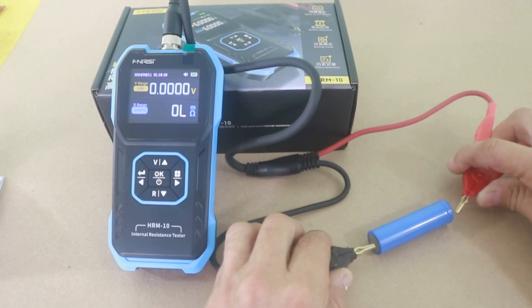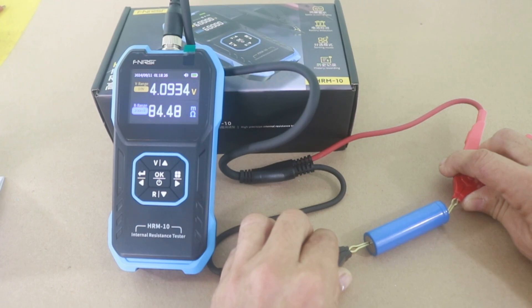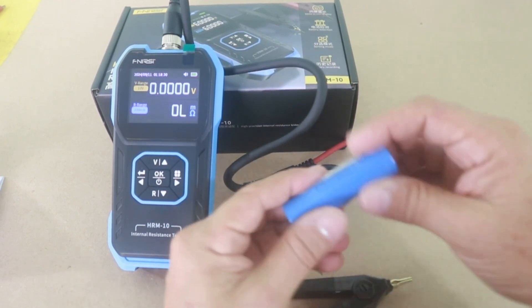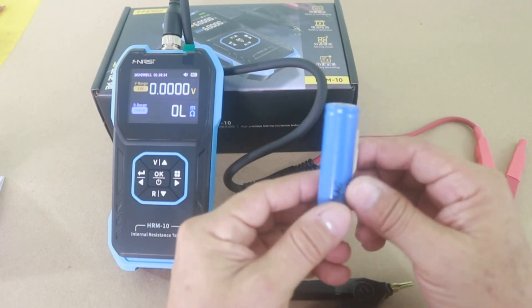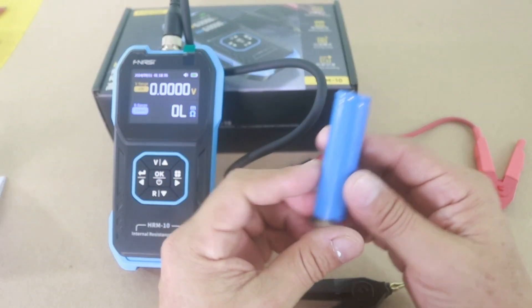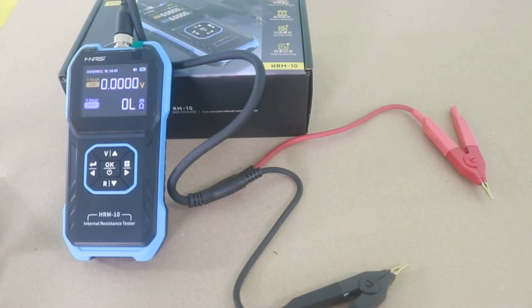And the internal resistance is around 80. Let me press firmly. It is about 85 milliohms, which is good for this type of battery. This measurement indicates that my battery is still in good shape.